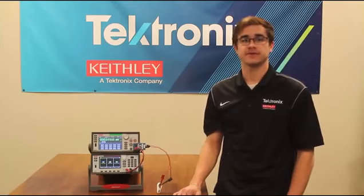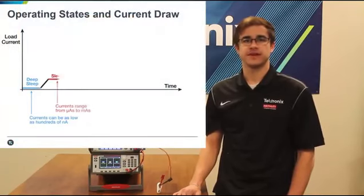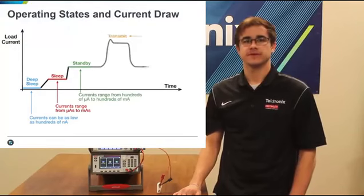Because these types of devices have multiple quickly changing states of operation, each consuming a different level of power, it is important to have an instrument that is able to measure both very low and high current. An IoT device can draw as low as hundreds of nanoamps in sleep mode and up to a couple of amps in transmit mode.